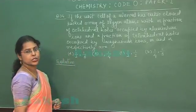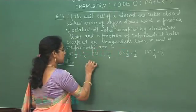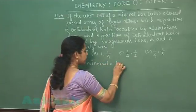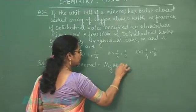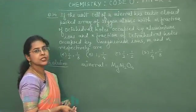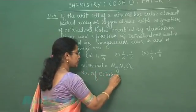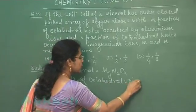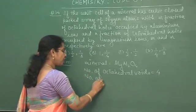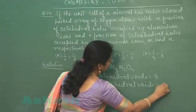In this question, the mineral is made up of magnesium, aluminium and oxygen, and this mineral is MgAl₂O₄. The lattice formation is taking place by oxygen atoms and this is a CCP lattice. In a CCP lattice, the number of octahedral voids per unit cell is 4, while the number of tetrahedral voids is 8.